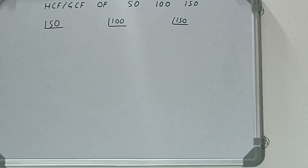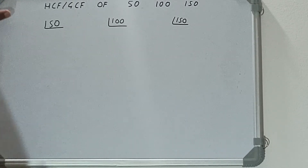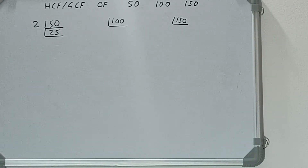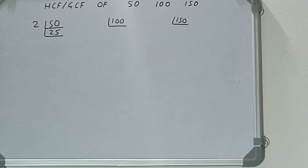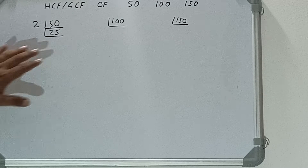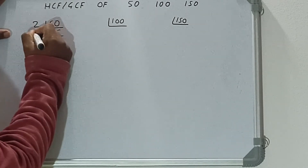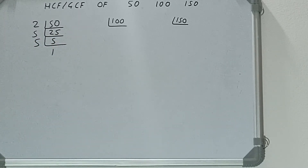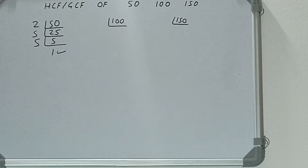Let's start with the number 50. We'll check with the lowest prime number 2 — is 50 divisible by 2? Yes, because the number is even. So divide it and we get 25. Is 25 divisible by 2? No, because it's odd. So we check the next lowest prime, 3 — is 25 divisible by 3? No. We check 5 — is 25 divisible by 5? Yes. Divide it and we get 5. 5 is again divisible by 5, giving us 1. Once we get 1, we're done.